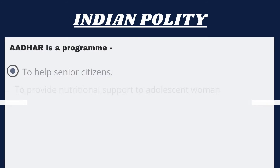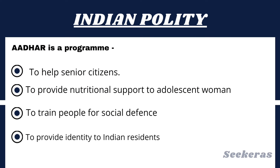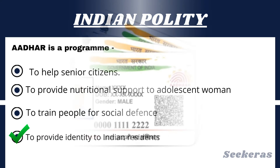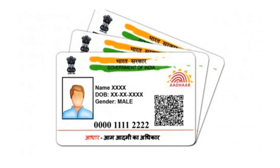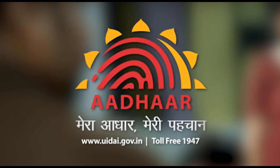Question number 5. Aadhaar is a program: Option 1, to help senior citizens; Option 2, to provide nutritional support to adolescent women; Option 3, to train people for social defense; or Option 4, to provide identity to Indian residents. The answer is Option 4, to provide identity to Indian residents. Aadhaar is a 12-digit individual identification number issued by the Unique Identification Authority of India on behalf of the Government of India.